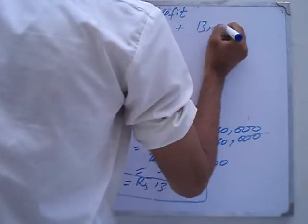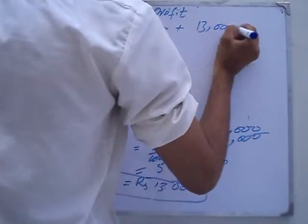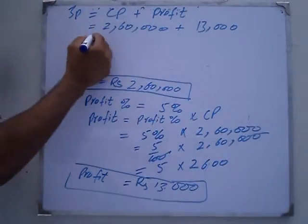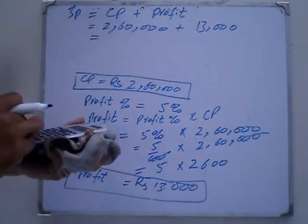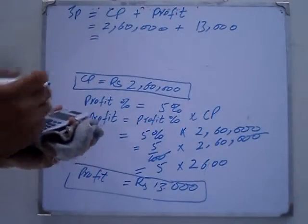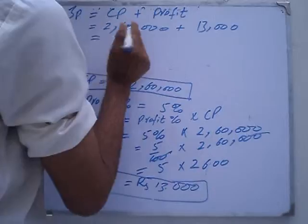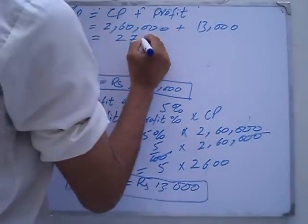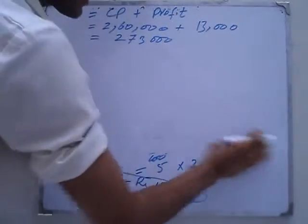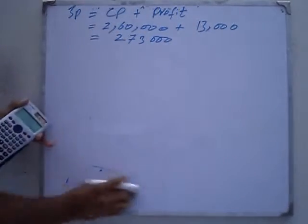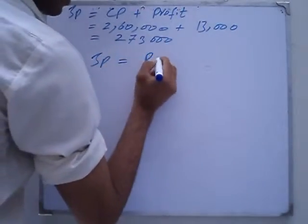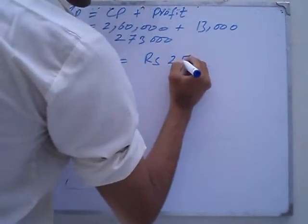Profit is 13,000. We add the cost price plus 2,60,000 plus 13,000, which equals 2,73,000. The selling price is RS 2,73,000.